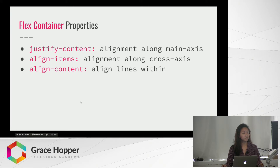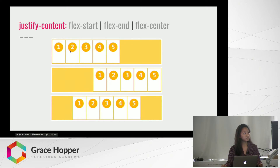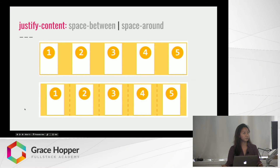Here we have some alignment properties. Justify content will align items along the main axis and align items will deal with the cross axis. So when items do not use up all available space in the container, if you set justify content to Flex start, it will be positioned at the start of the axis. It will be positioned at the end for Flex end, and for Flex center it will just be centered.